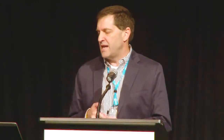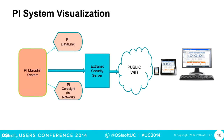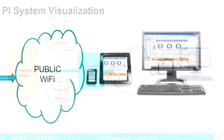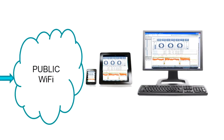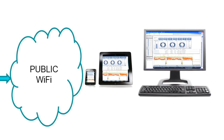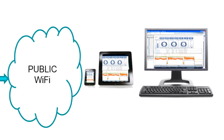We're using PI DataLink to get the visualization and PI Coresight using laptops connected to the network. We've also started using Coresight on iPads and iPhones through the public Wi-Fi system. That's really important for people working in drilling because they have a wide expanse of area that they have to move around in.